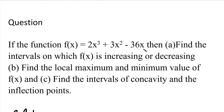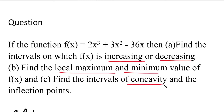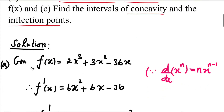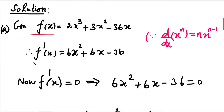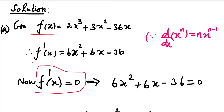First, we check if the function f of x is increasing or decreasing. Next, we find the local maximum and local minimum value. Finally, we find the concavity intervals and inflection points. To start, we find the critical values. First, we set f dash of x equal to 0, because the equation f dash of x equal to 0 is used to find the critical numbers.